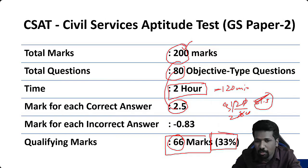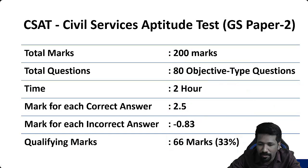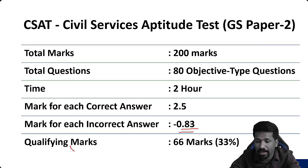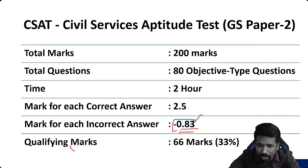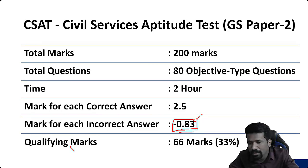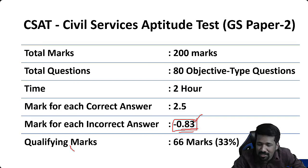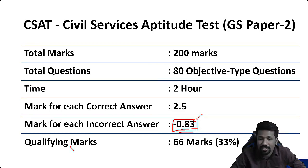Each question carries two and a half marks, and if you get an answer wrong, one-third of two and a half marks — approximately 0.83 marks — will be deducted as negative marking. This is more severe than most exams which have one-fourth negative marking. So you cannot take too many chances. Even when you understand a question correctly, a calculation mistake can lead to a negative mark. That's why you need buffer questions — attempting more than just the qualifying minimum.